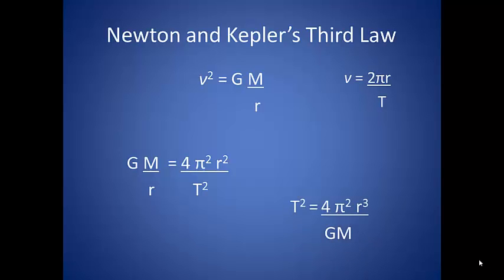We get T squared equal to 4π² r³ divided by GM, the universal gravitational constant times the mass of the sun.